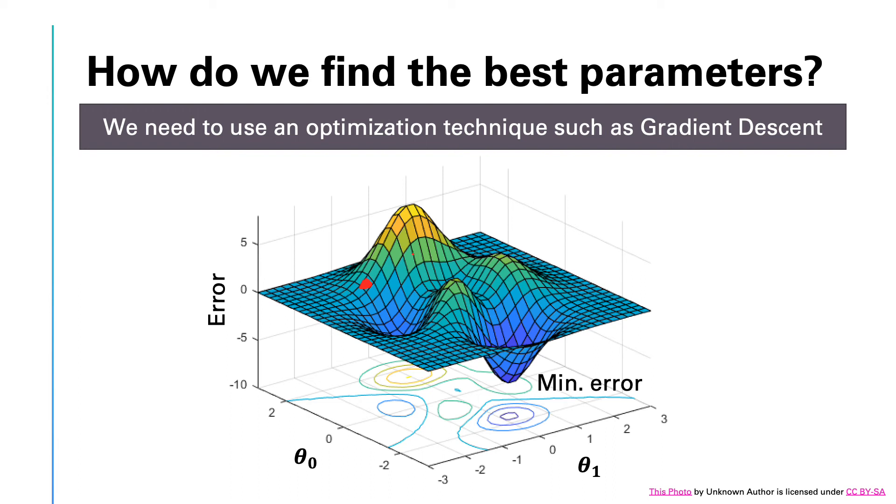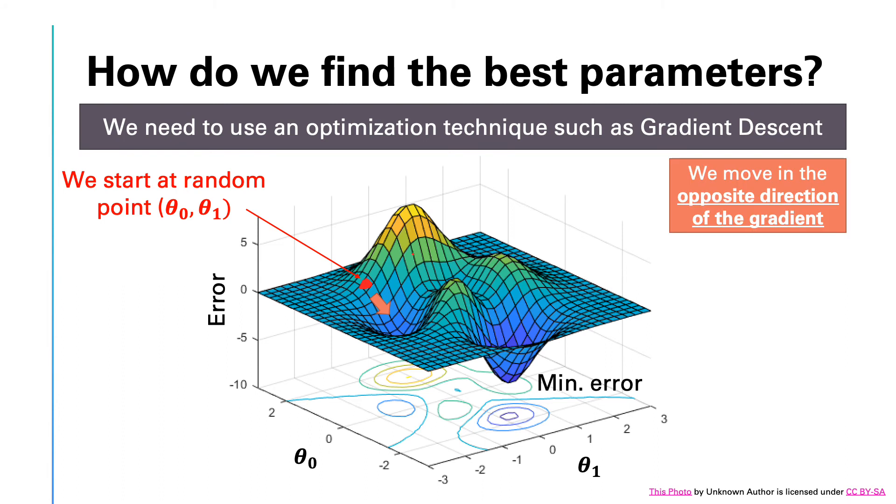However, this minimum point might not be the global minimum, but just the local minimum. The way gradient descent works is that starting at a random point on the surface, we need to move toward the direction of the minimum point. This direction in which we need to move is obtained using the gradient.